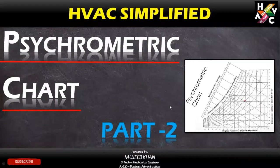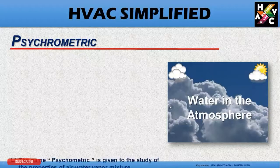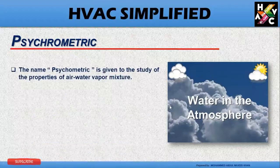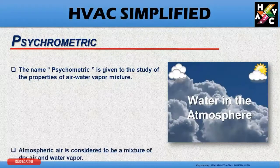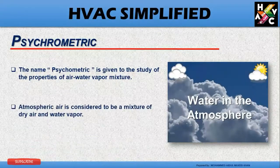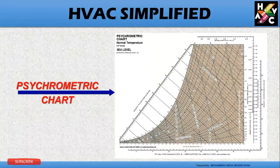So let us begin with part 2, which is the psychrometric chart. The name psychrometric is given to the study of the properties of air-water vapor mixtures. Atmospheric air is considered to be a mixture of dry air and water vapor.